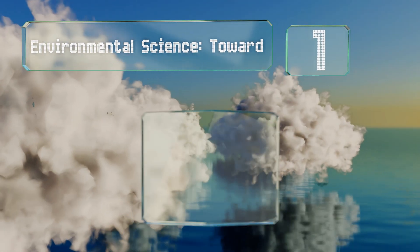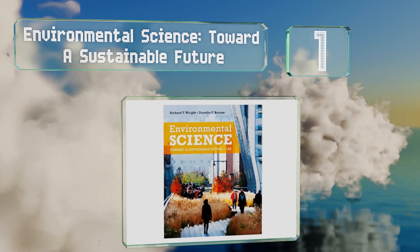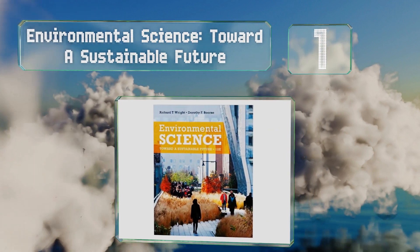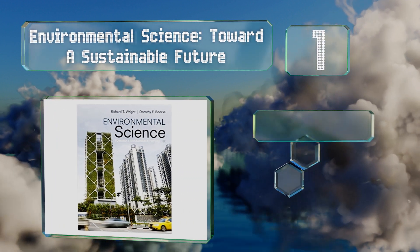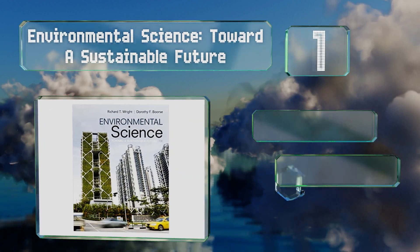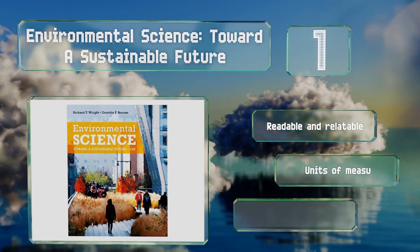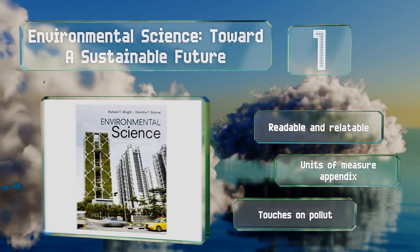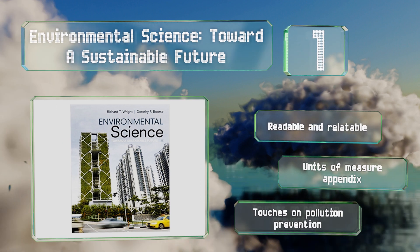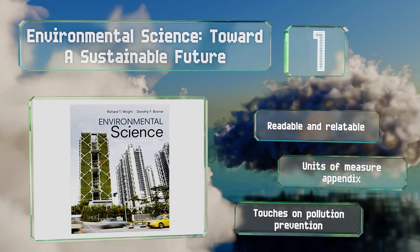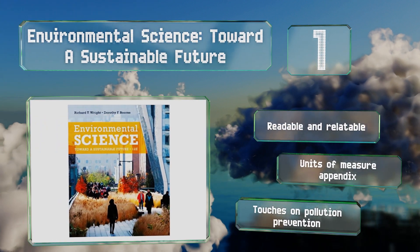Coming in at number 1 on our list, 'Toward a Sustainable Future' has content that's accessible to newcomers to the field with a focus on the three key themes of science, sustainability, and stewardship. This makes it current and important as it builds a useful foundation. It's easy to read and relatable, and includes a units of measure appendix and touches on preventing pollution.